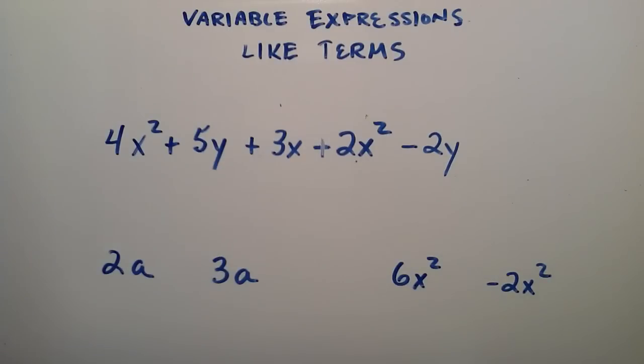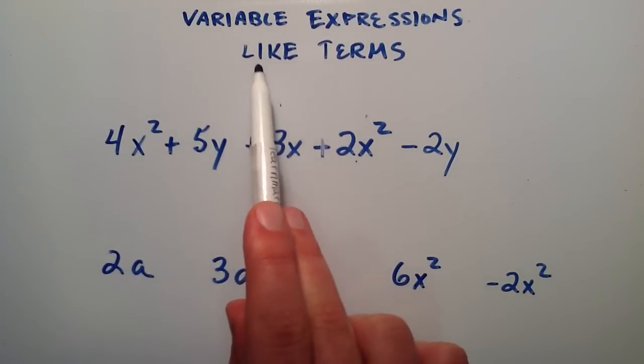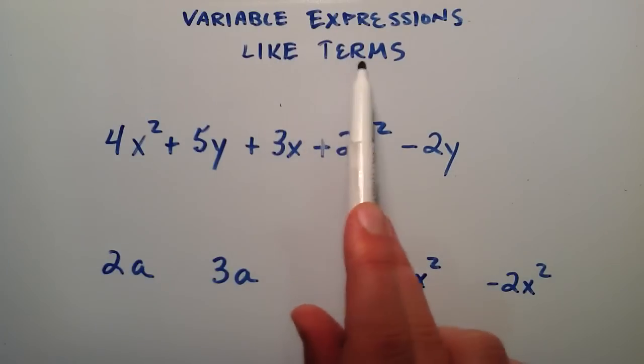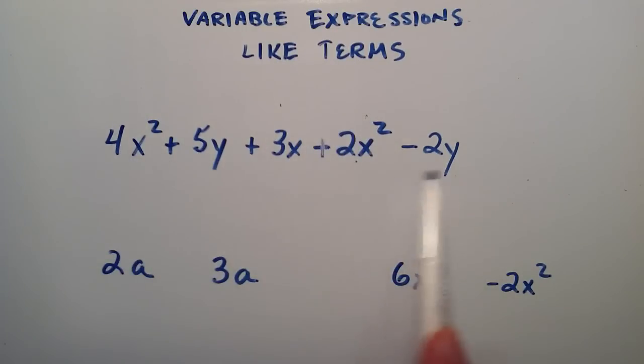Hey everybody, this is Paul. Welcome to your 17th tutorial in the intermediate algebra playlist. In this tutorial I'm going to be discussing like terms and how we can use like terms to simplify a variable expression like this.